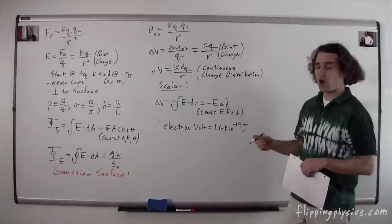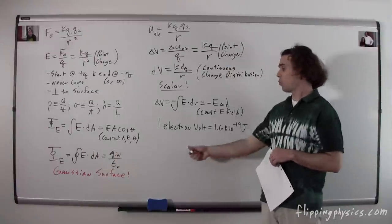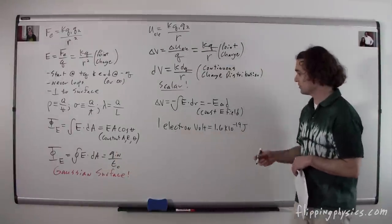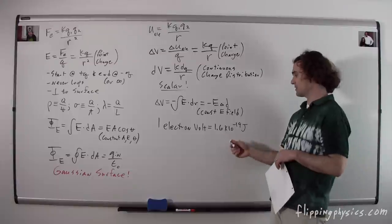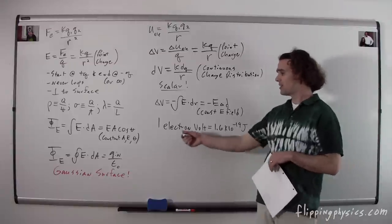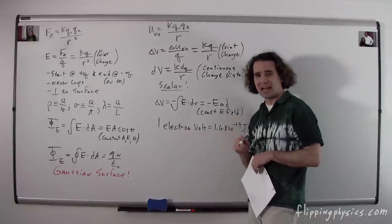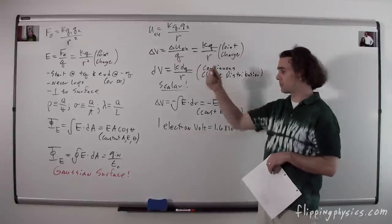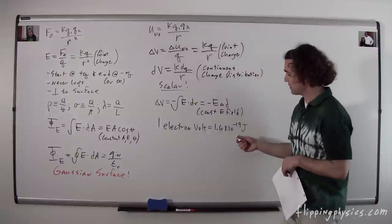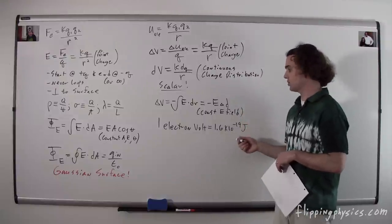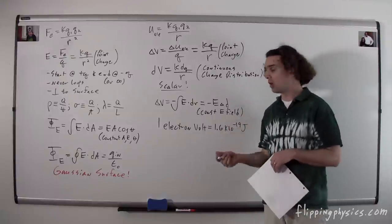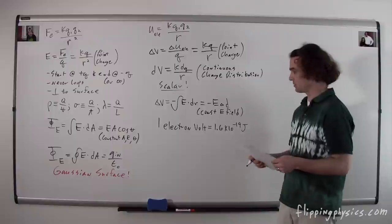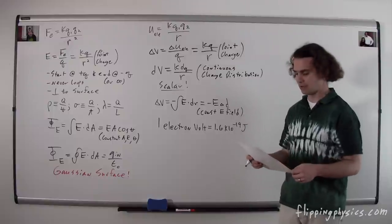A unit that often gets used on the AP test is one electron volt. One electron volt is defined as 1.6 × 10⁻¹⁹ joules. Notice that electron volt sounds like it would be electric potential difference, but it is not. It is simply a measurement of energy — a very small amount of energy used for describing very small amounts of energy.